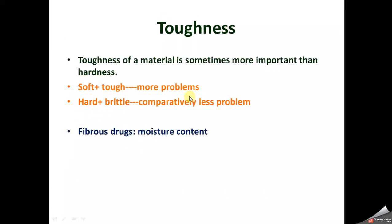Toughness is sometimes more important than hardness. A material that is soft but tough may create more problems in size reduction, whereas a hard but brittle material can be easily reduced in size with impact — which is not possible with a comparatively tough material. For fibrous materials, moisture content must also be considered; otherwise they will not be reduced in size at all.